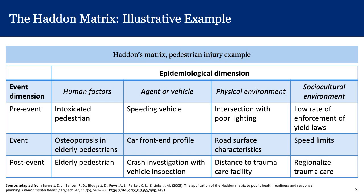Depending on the height of the front end profile of the car versus the height of the struck pedestrian, that could result in different patterns of acute injury. Under the physical environmental column in the event phase row, road surface characteristics are relevant — is it icy, or are there potholes? Under sociocultural environment, speed limits could be a factor — are they perhaps higher than they should be, or are they ignored? These considerations can literally impact the event.